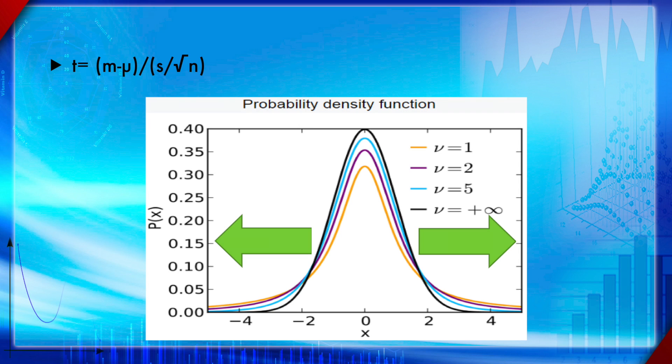If the sample mean m is larger than the population mean, the value of t is going to be positive. Otherwise, it's going to be negative. That is why the mean at zero is the peak or the mode of this histogram is at zero.